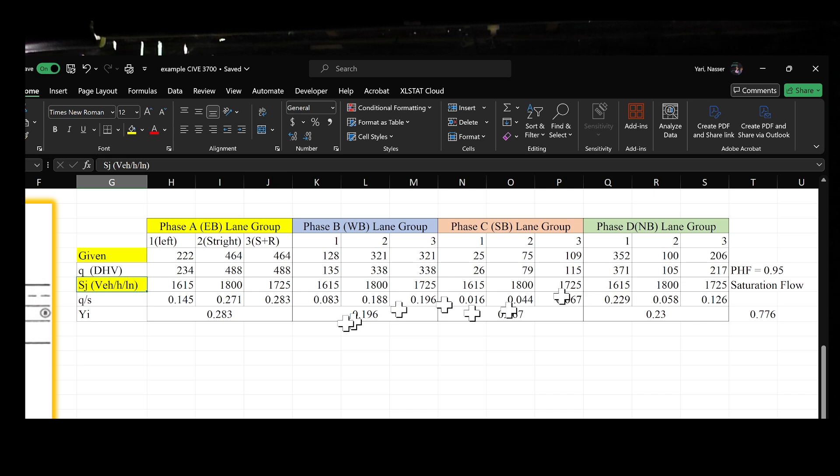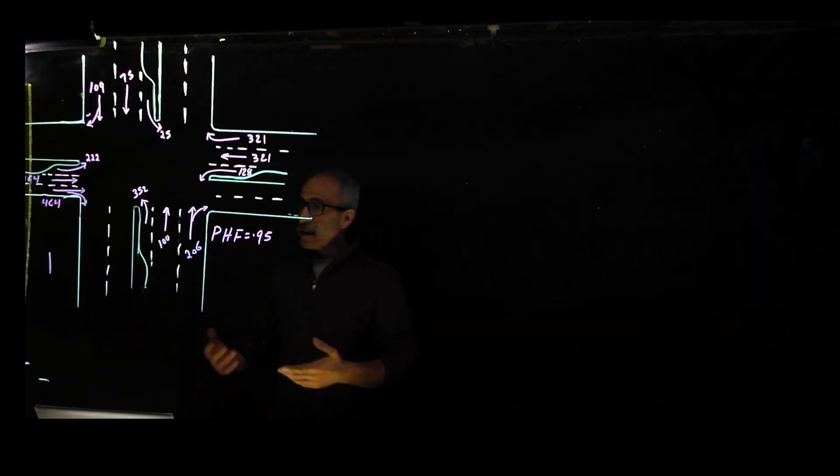Then we take the highest of each phase. For example, eastbound phase the highest flow to saturation ratio is 0.283, and we do the same thing for westbound, southbound, and northbound. We take the total of all which becomes 0.776. We have this number then we're going to use all those equations to calculate the green time.